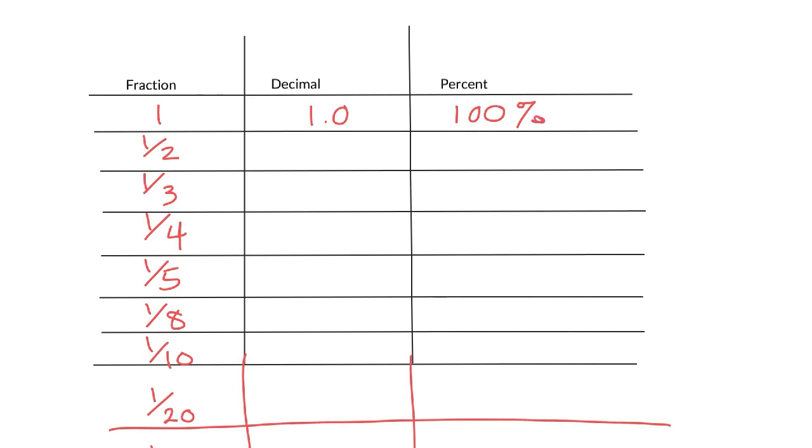Note that if we take a number that's bigger than 1, then that means we have more than whatever we started with. For example, 2 as a decimal would be 2.0, but as a percent, that would be 200%, meaning that we have more than we ever started with.